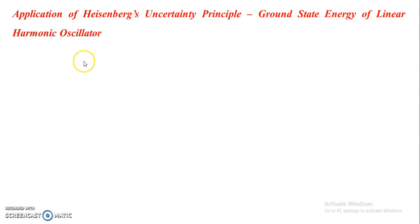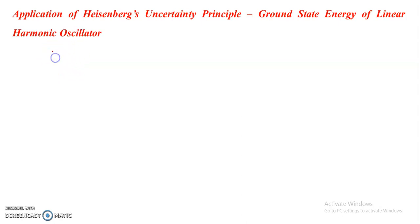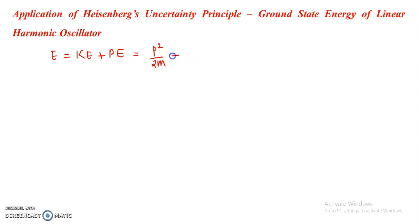In order to calculate the ground state energy of the linear harmonic oscillator, we are going to consider the position-momentum uncertainty principle. For a linear harmonic oscillator, we are considering the one-dimensional case. The total energy E is the sum of kinetic and potential energies: kinetic energy plus potential energy, which for a one-dimensional linear harmonic oscillator equals p² / 2m plus half kx².